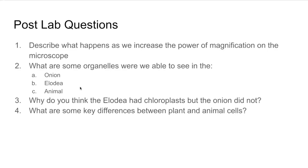Key differences between plant and animal cells: both plant cells we looked at had a cell wall, while animal cells do not. In the plant cells, we were able to see chloroplasts with the Elodea, but in the animal cell we would never see chloroplasts. Similarities include that all of them have a nucleus, cytoplasm, and a plasma membrane.